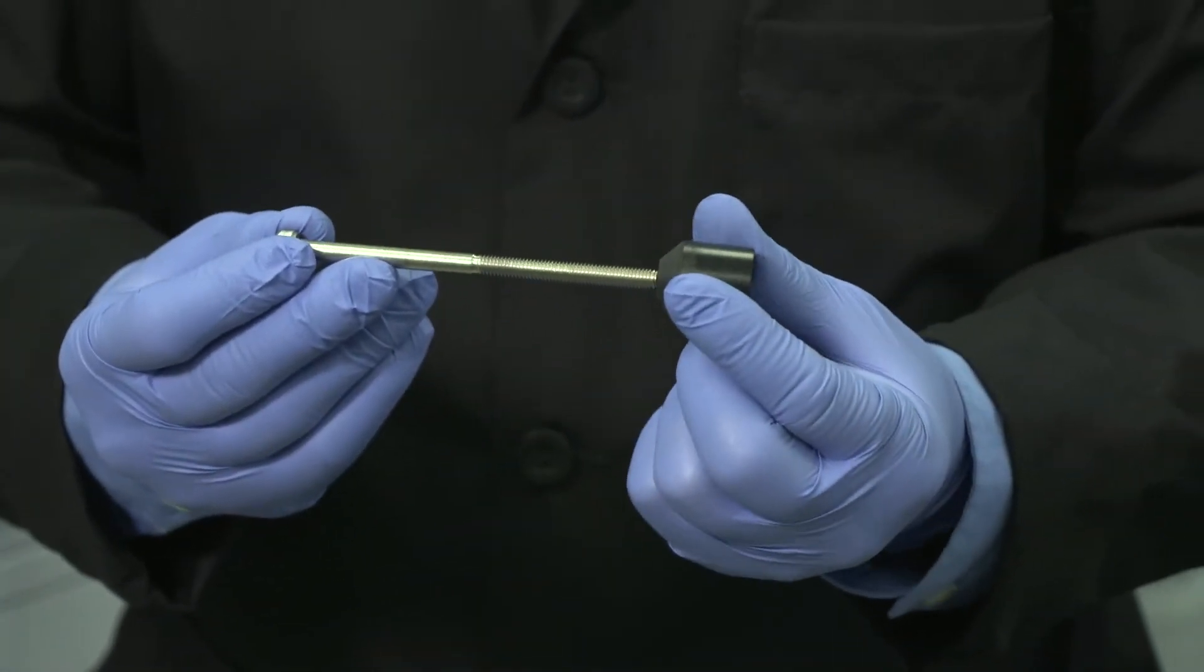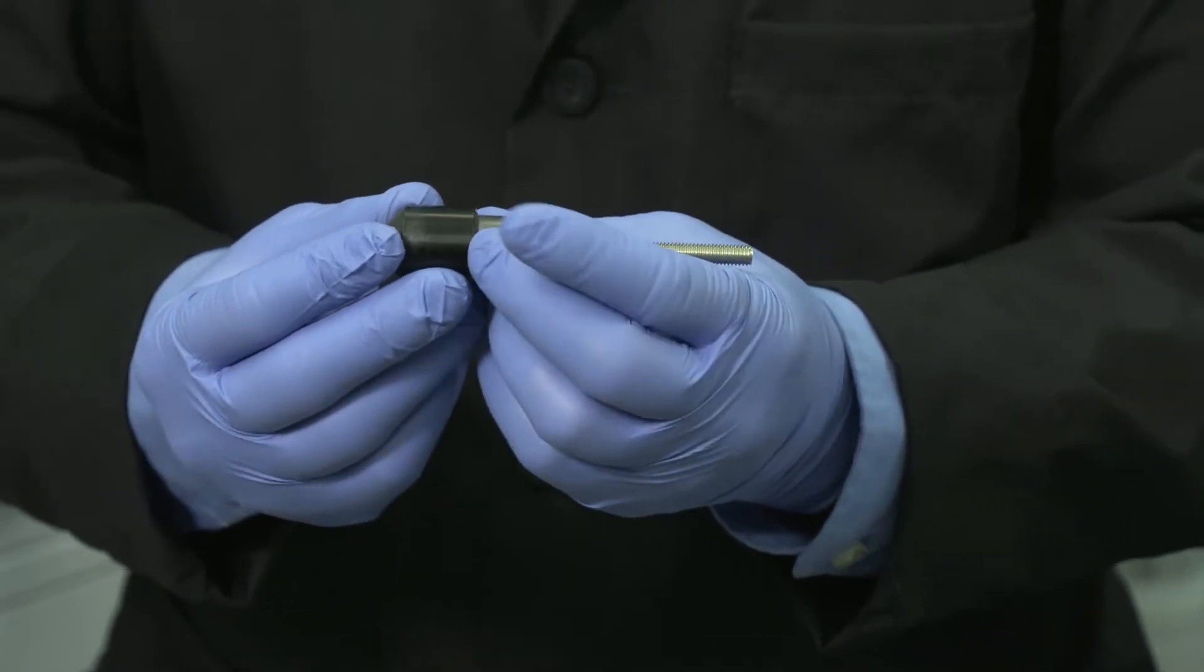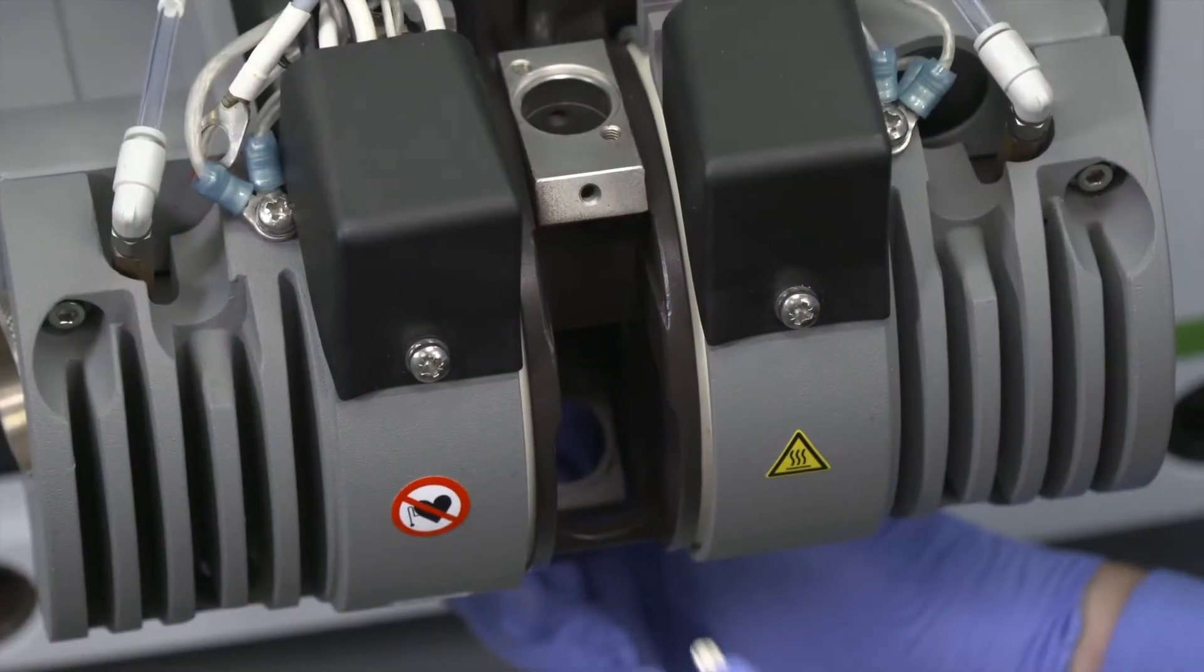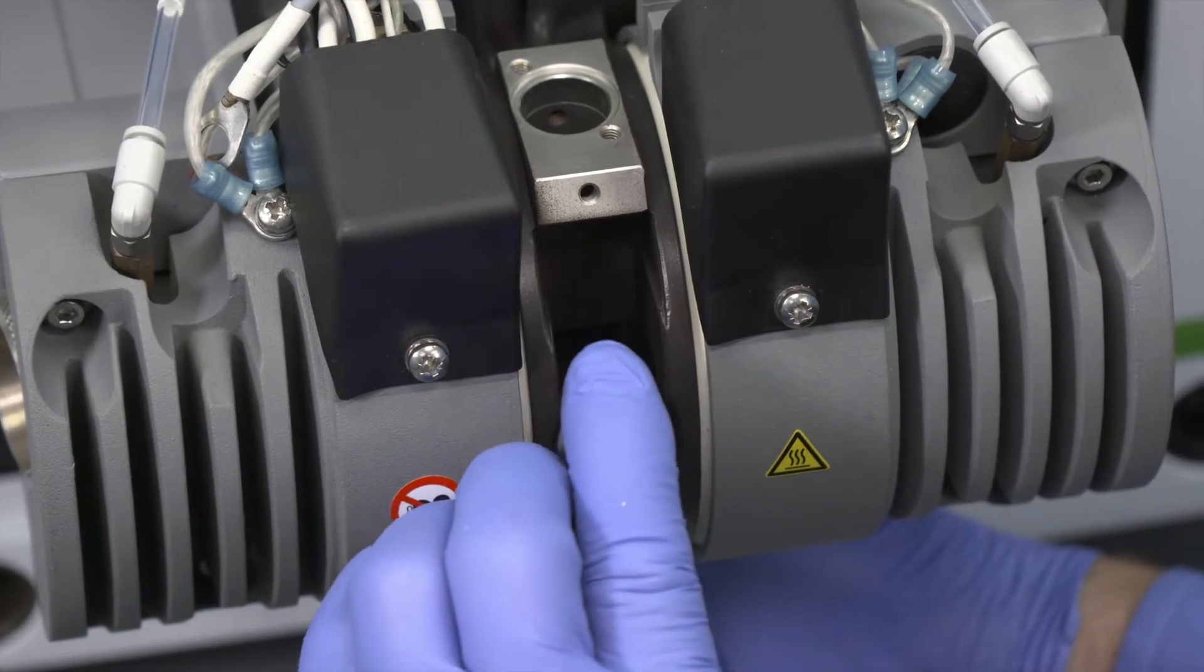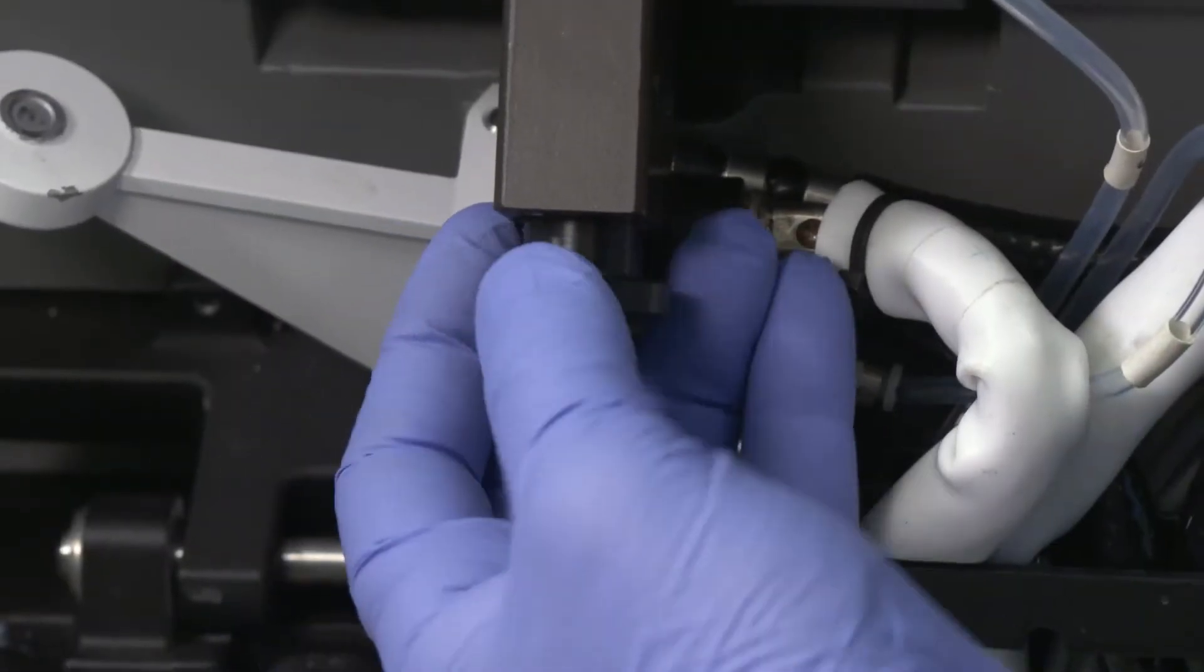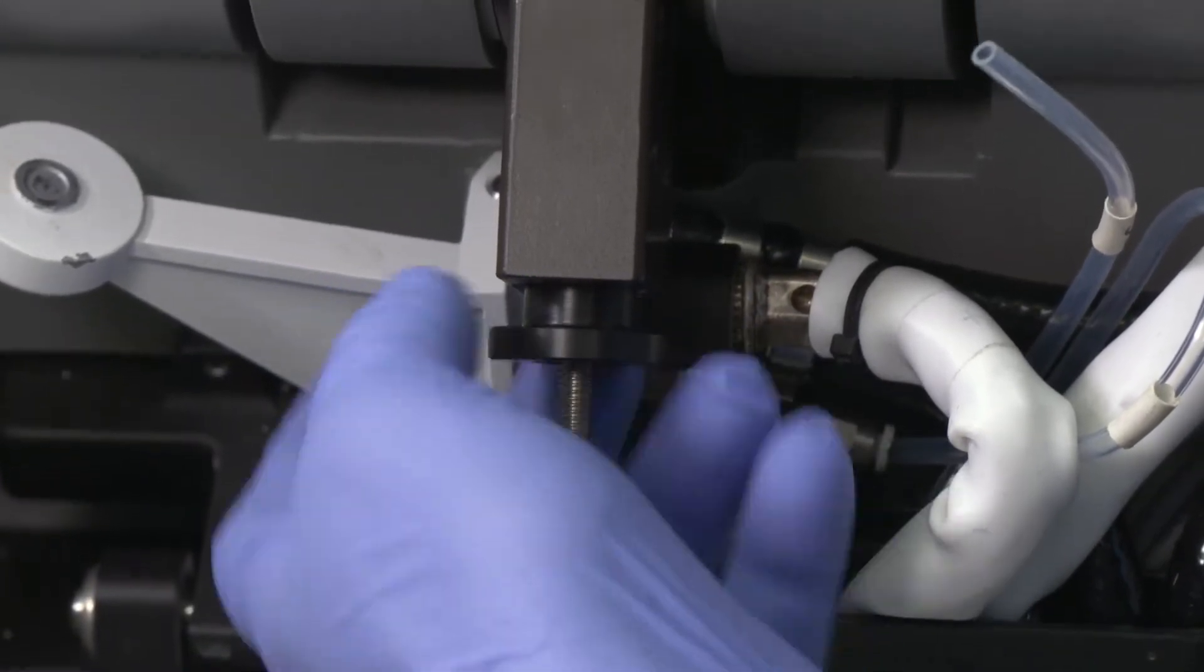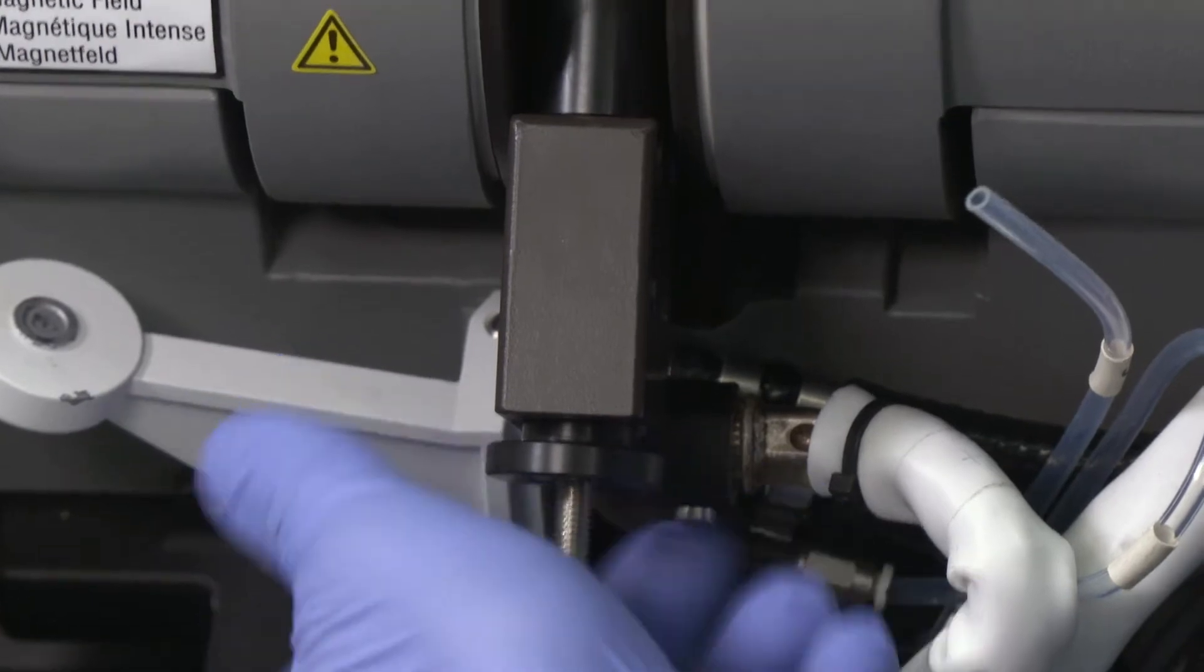To start, slide the guide and the front contact onto the long bolt. Then slide the bolt into the front contact housing such that the new contact sits in the opening of the housing. Then screw the threaded cylinder onto the bolt until the contact and cylinder are against either side of the housing.